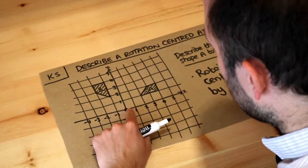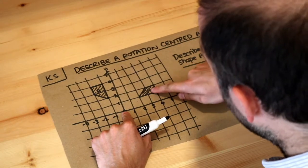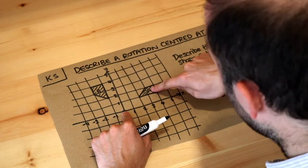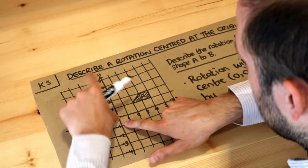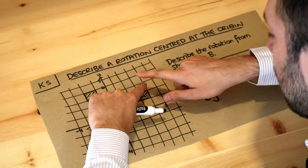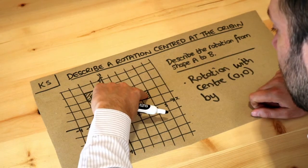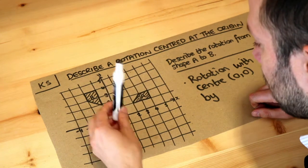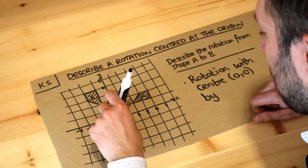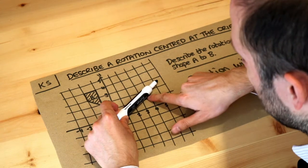This is the center of rotation. Can you see that shape A, to go from A to B, is rotating this way? If I put my pen on the center of rotation, this is shape A, and I spin about that point.